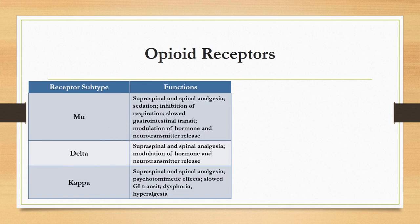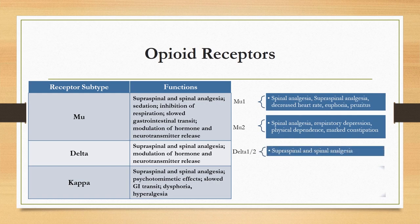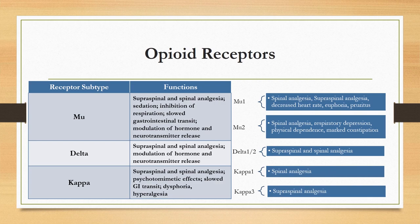Opioids achieve their analgesic effects by binding to specific opioid receptors. There are three receptor subtypes: mu, delta, and kappa, further broken down into mu-1, mu-2, delta-1, delta-2, and kappa-1 and kappa-3. Mu-1 receptors are responsible for bradycardia and euphoria; mu-2 for physical dependence and respiratory depression. Spinal analgesia is primarily mediated by mu-2, while supraspinal analgesia is mediated by all receptors except mu-2. Kappa-1 provides spinal analgesia; kappa-3 is primarily supraspinal. Kappa receptor stimulation causes dysphoria-like hallucinations and sedation.